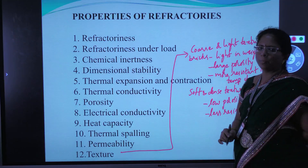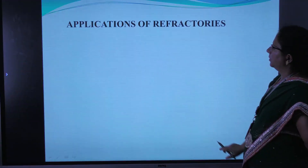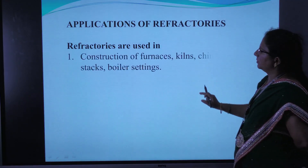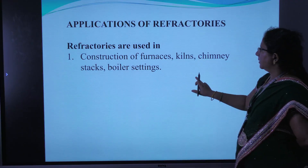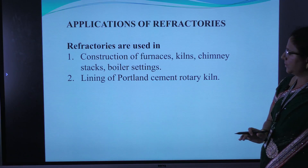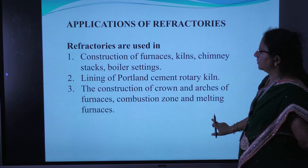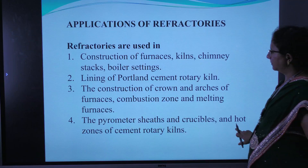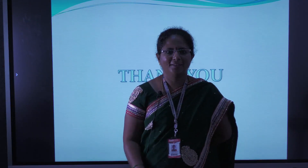These are some of the important properties of refractories. Next, the applications of refractories: they are used in the construction of furnaces, kilns, chimneys, stacks, and boilers; for lining Portland cement rotary kilns; construction of crowns and arches of furnaces; combustion zones and melting furnaces; and in pyrometer sheets, crucibles, and hot zones of cement rotary kilns. With this, the refractories topic is completed. In the next session, I will start lubricants. Thank you.